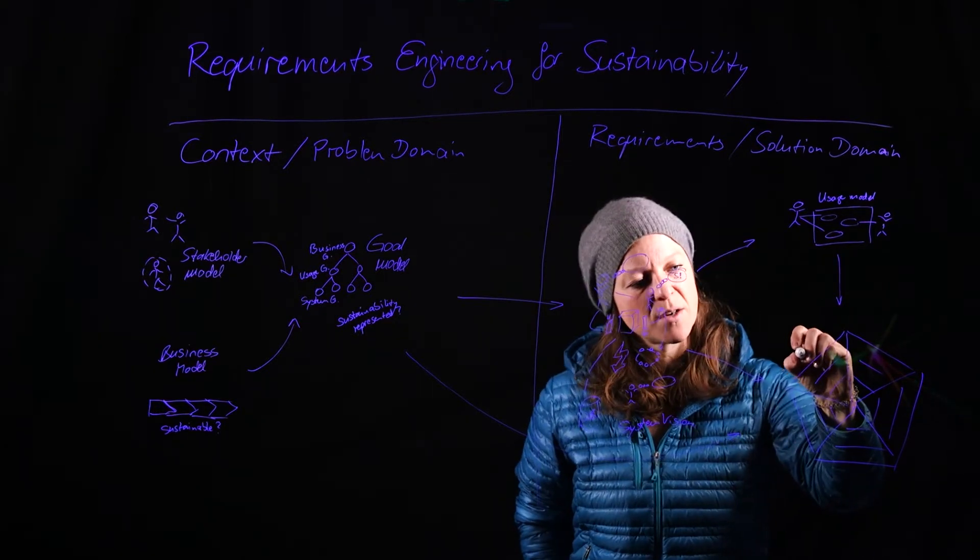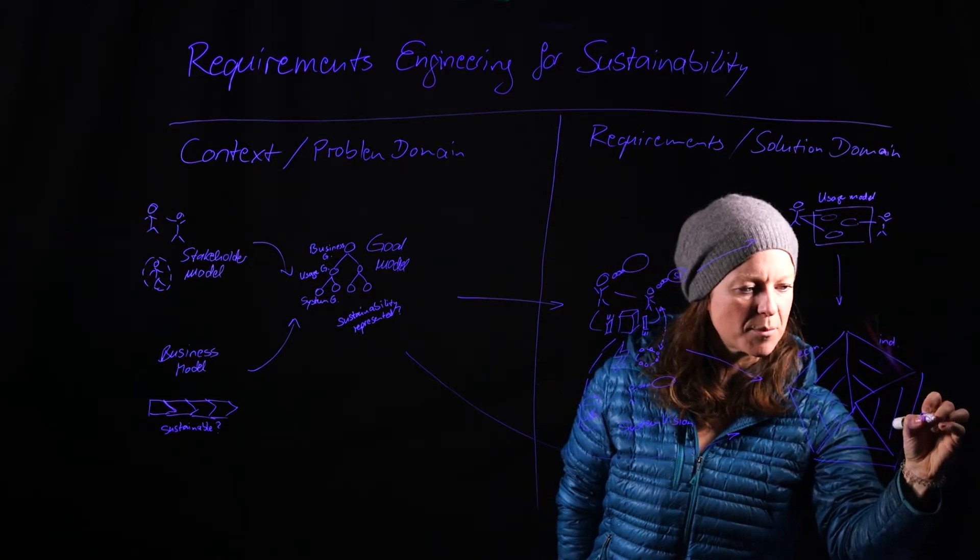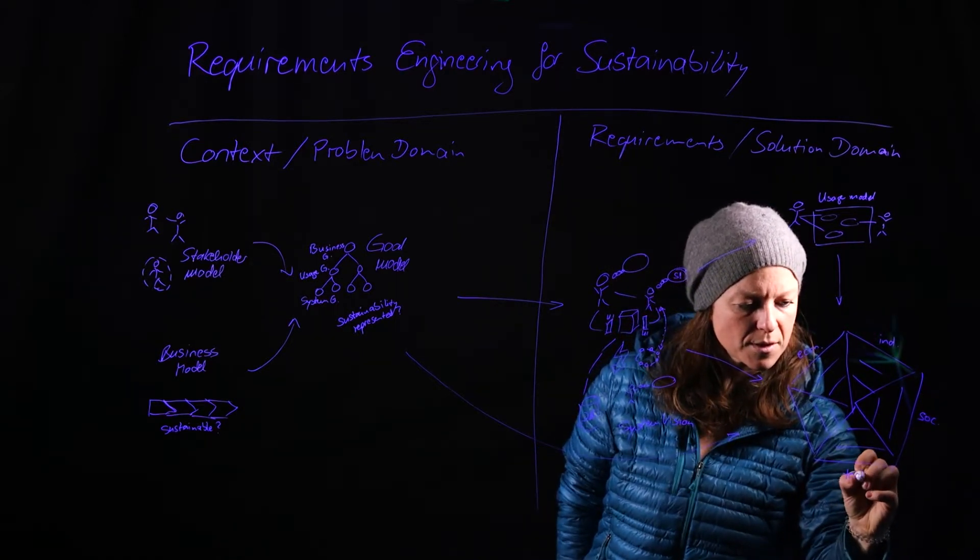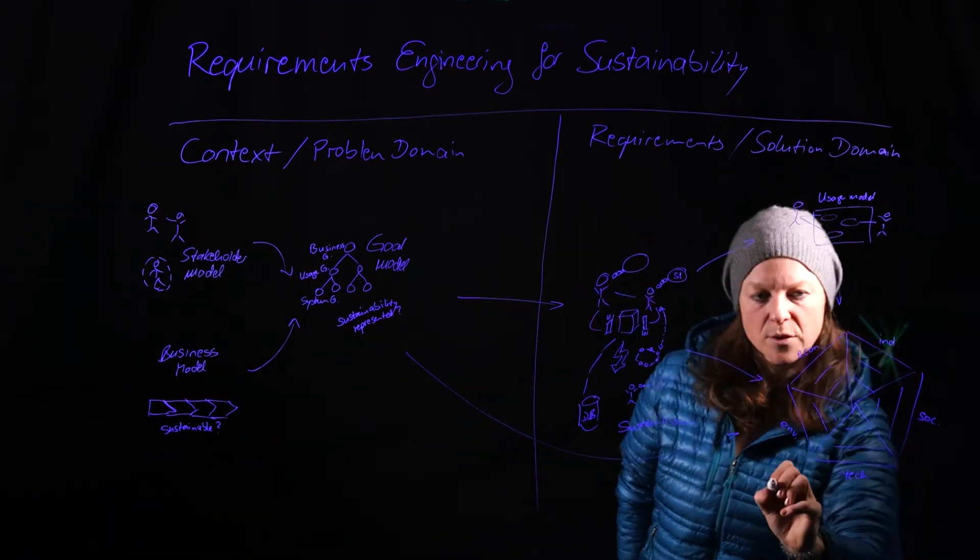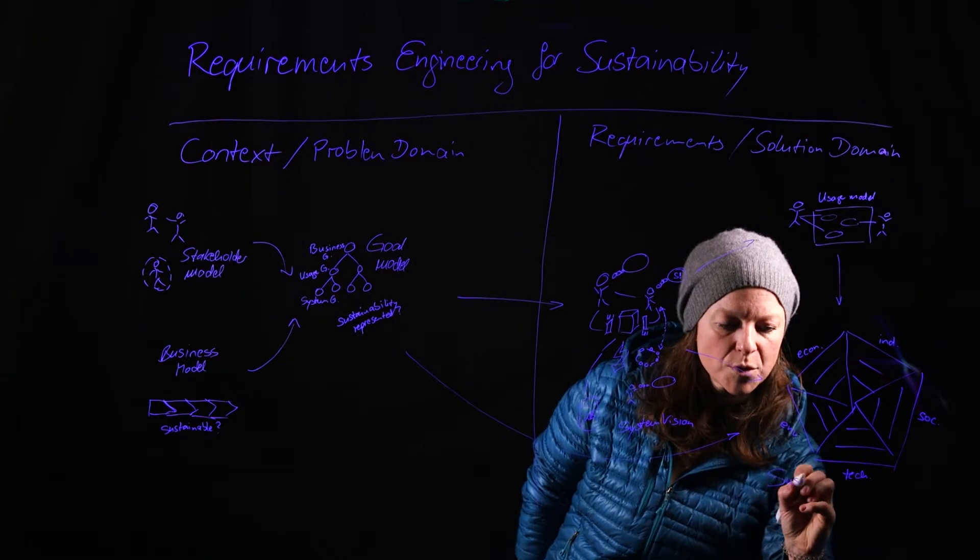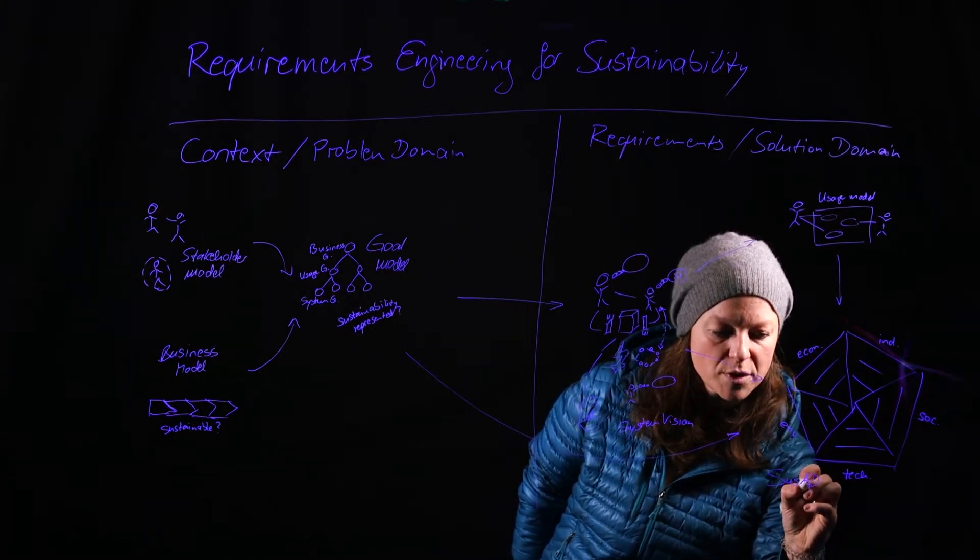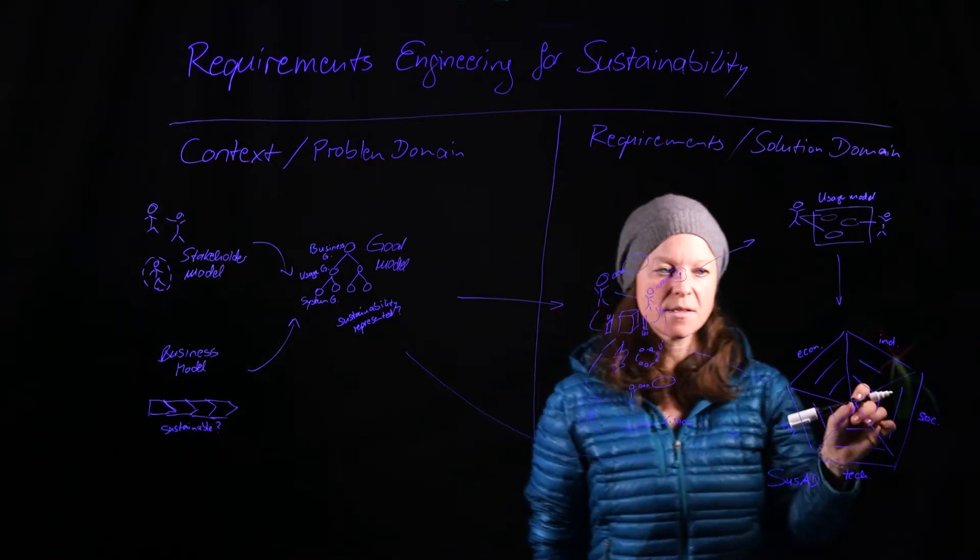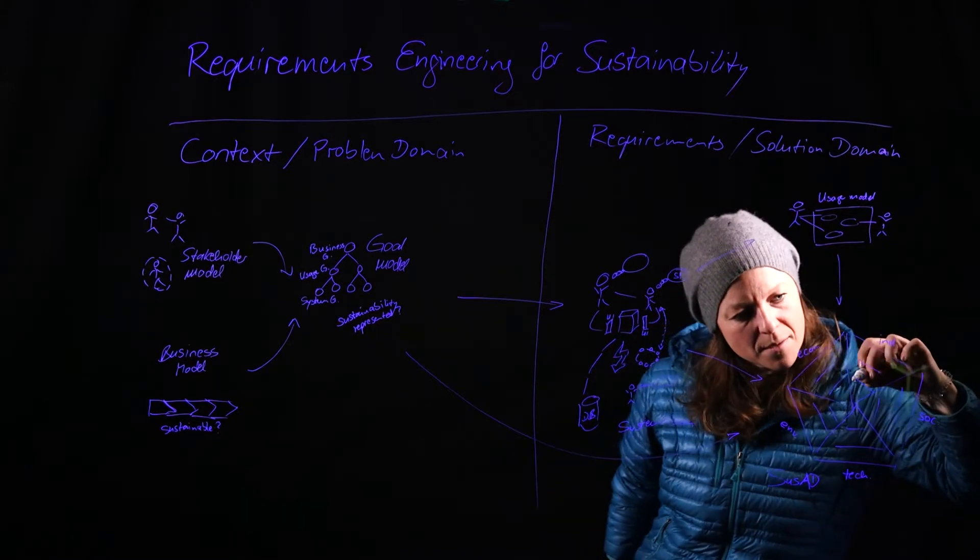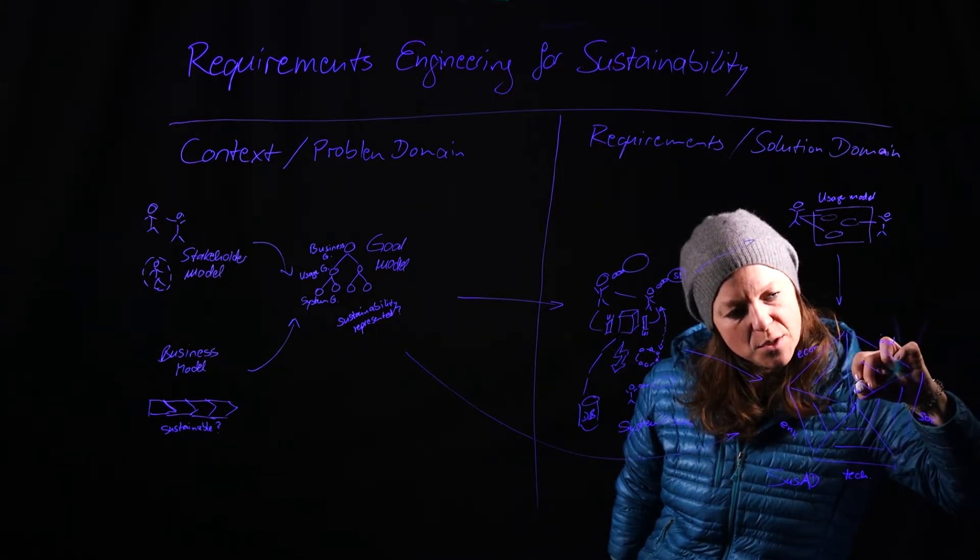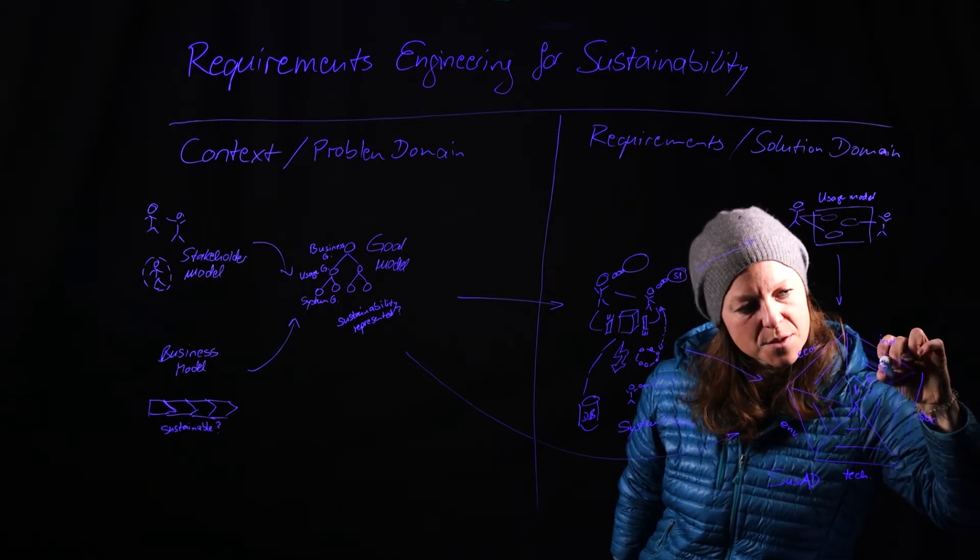So we have our sustainability analysis diagram that has the three orders of effect. So we have the economic dimension, the individual dimension, the social dimension, technical dimension, and the environmental dimension. So our sustainability analysis diagram, we usually abbreviate it with SUSAT because the name is pretty long. This sustainability analysis diagram will look into the lifecycle effects, the enabling effects, and the systemic effects.